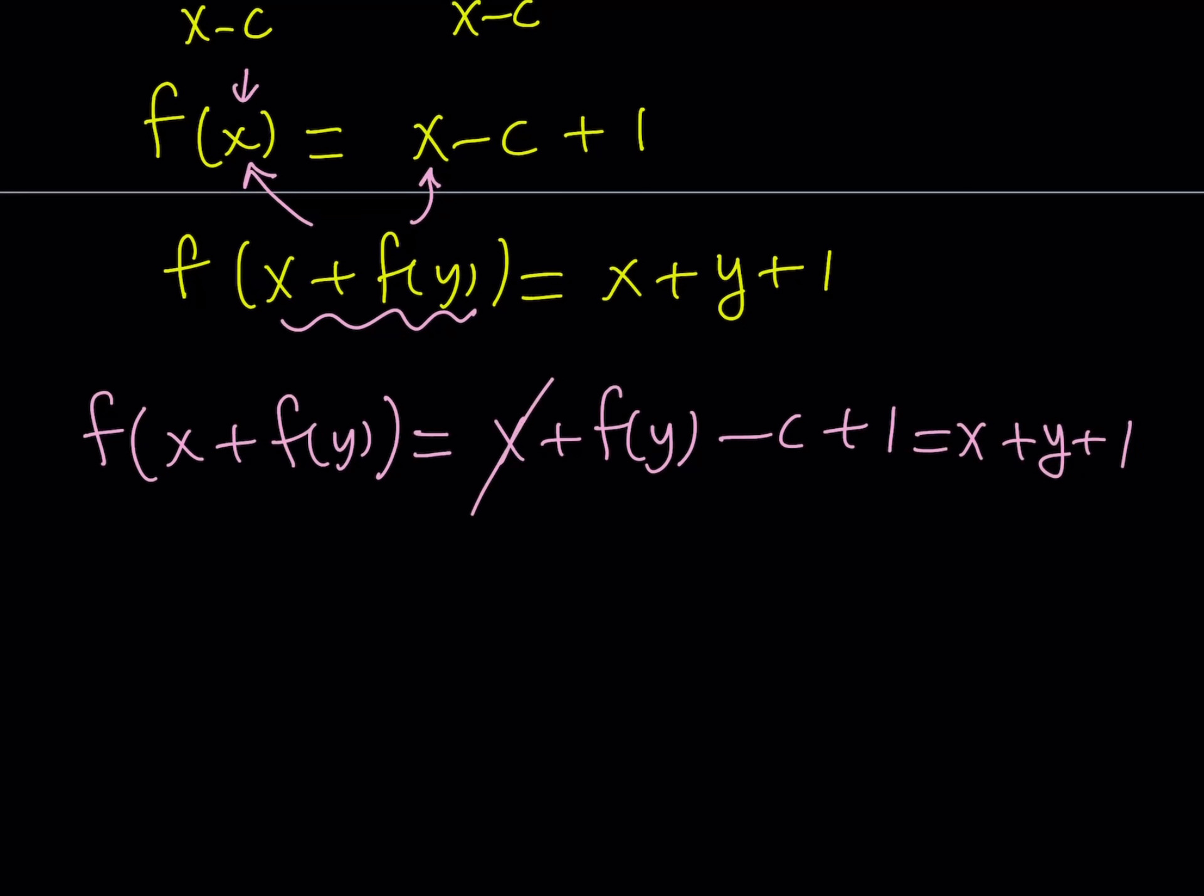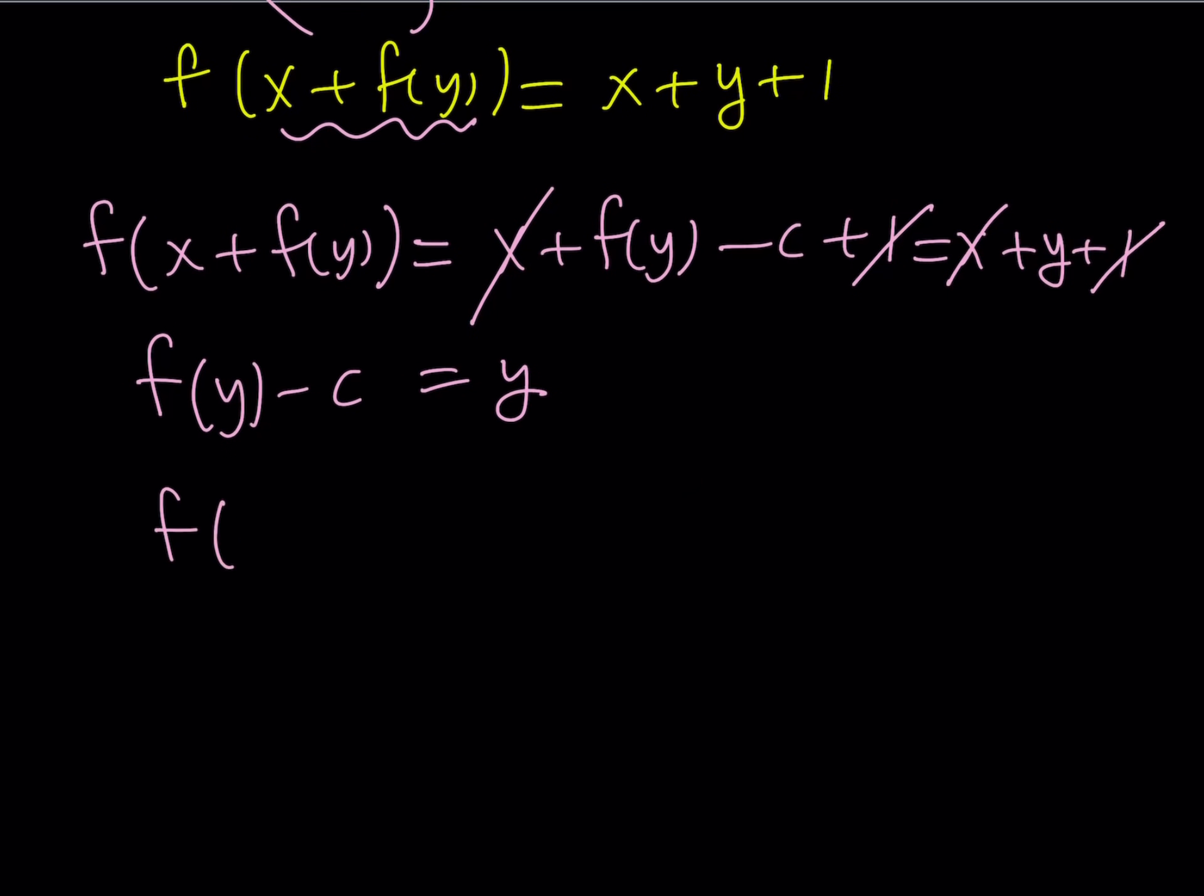From here, x cancels out, leaving us with, and the 1 cancels out. That leaves us with f of y minus c equals y. And then we can just add c to both sides, and that's going to give us f of y equals y plus c. Great. So we got another expression for f, but in terms of y this time.